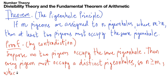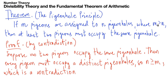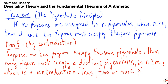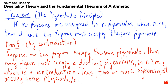But this is a contradiction, since we assumed m is strictly greater than n by the pigeonhole principle setup. Thus, two or more pigeons must occupy some pigeonhole. Since the assumption that no two pigeons share a pigeonhole leads to a contradiction, we conclude that the pigeonhole principle holds.